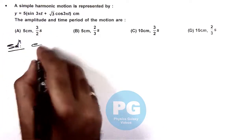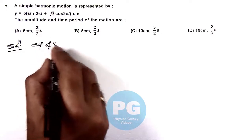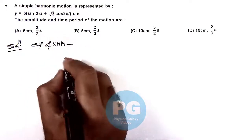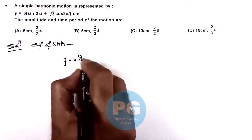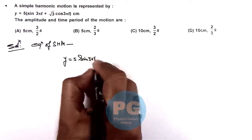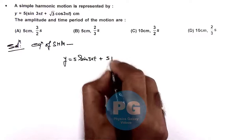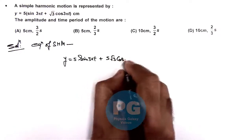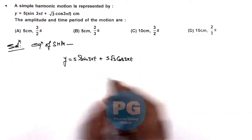So we already studied that here, equation of SHM, which is given in form y equals 5 sine 3π t plus 5√3 cos 3π t.